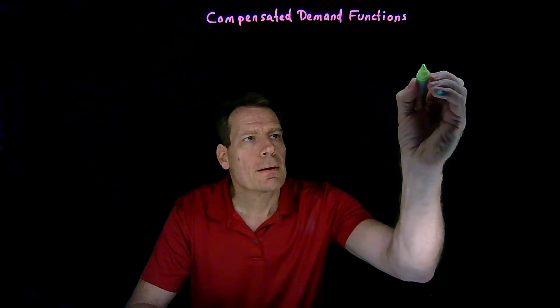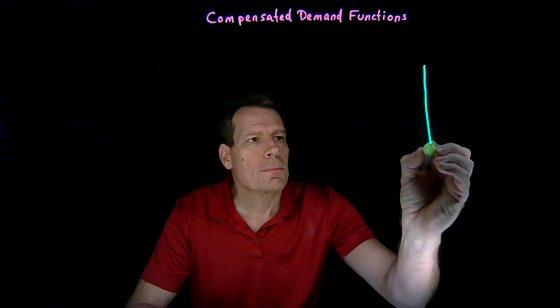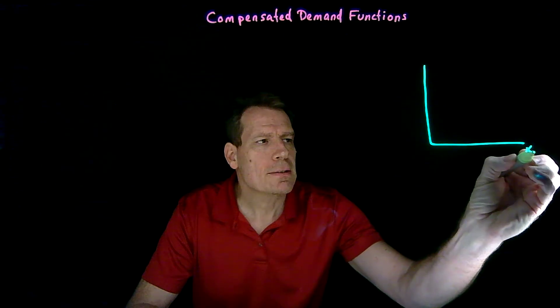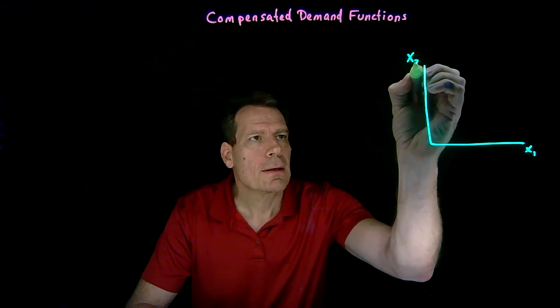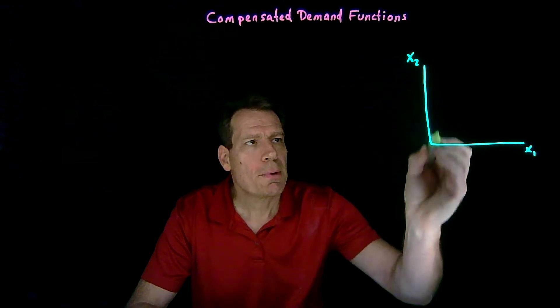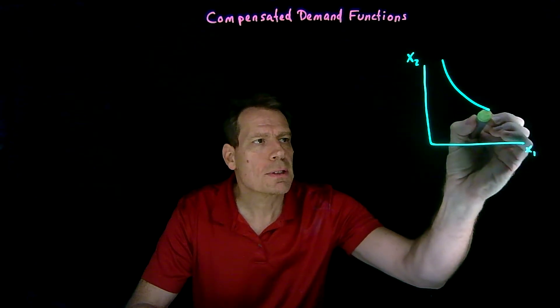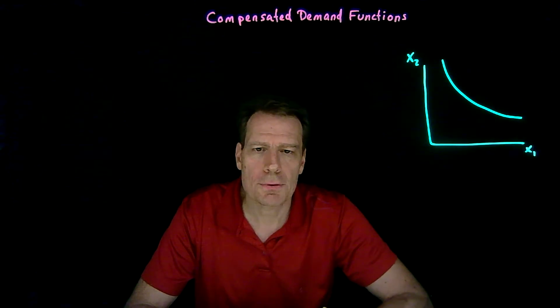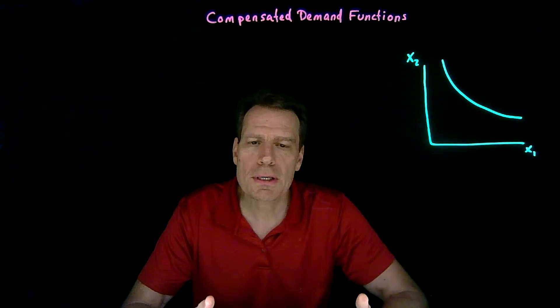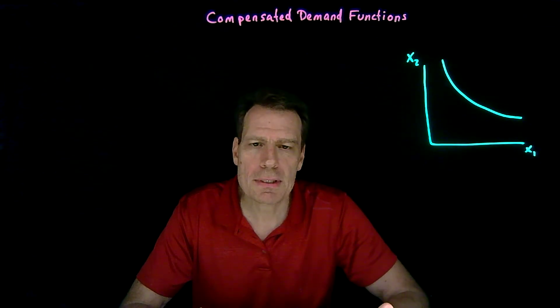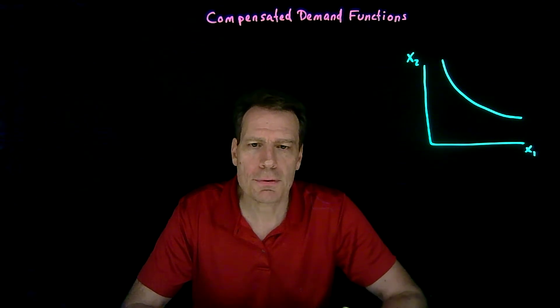To see how we would derive those functions, we need to remind ourselves what compensated demands are actually all about. When we talk about compensated demands, we're talking about demands that tell us how much of a good you're going to consume at different prices, assuming you always end up on the same indifference curve — assuming we always give you enough compensation to reach that indifference curve.